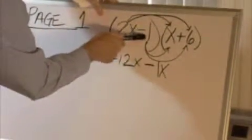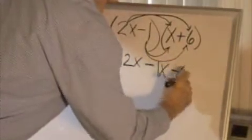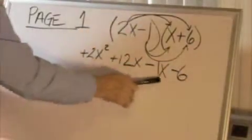Now the negative one times a plus six, of course, is a minus six. These four pieces are your answer.